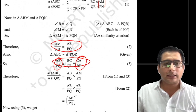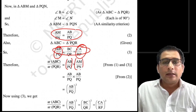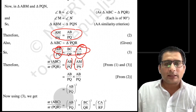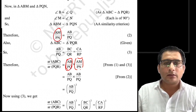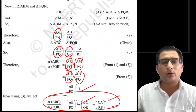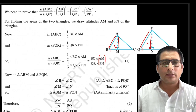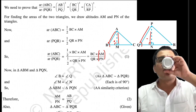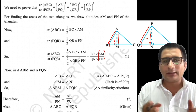Toh yahan pe unhone likha — AB upon PQ, AM upon PN ki jagah rakh diya. Unhone dono ko hi replace kar diya: AM upon PN ki jagah bhi AB upon PQ, aur BC upon QR ki jagah bhi AB upon PQ. Toh yeh theorem aa gayi. Is there any doubt in this theorem? I hope this theorem is clear to you all now. The proof of this theorem is easy. So now, based on this theorem, let's move to the exercise questions and try to solve some questions — then this theorem will be completely clear to you.